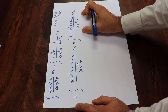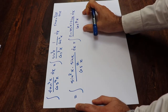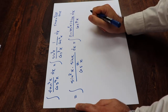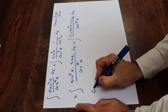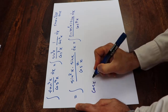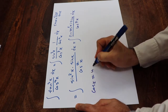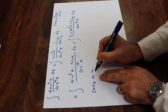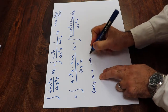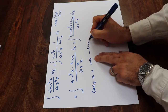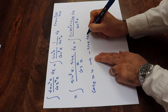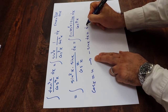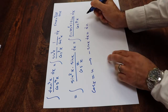This integral can be solved by using the substitution rule. If you define u = cosine x and take the derivative from each side, then minus sine x dx will be equal to du.